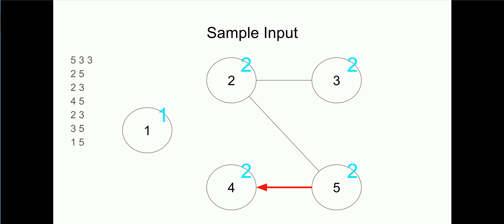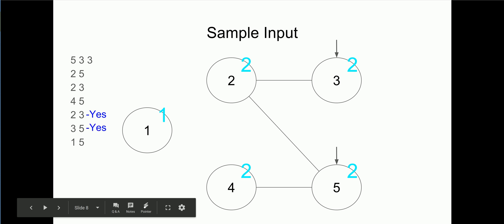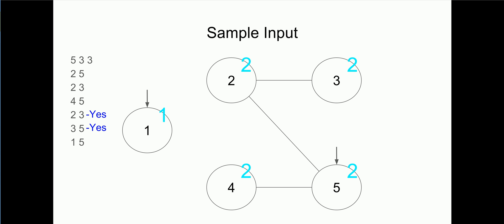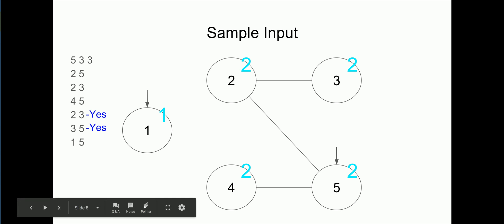Now we answer the queries in O(1) using the component labels. The first query — nodes two and three — both have component value two, so we answer yes. The second query — nodes three and five — also both in component two, so yes. The last query — nodes one and five — node one is in component one and node five is in component two; since they're in different components, they're not connected, so the answer is no. They will never meet.